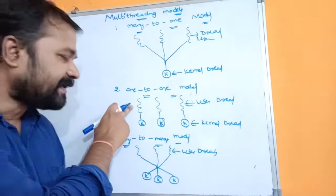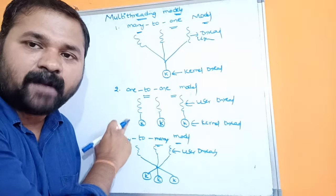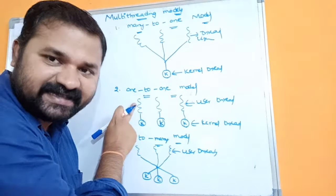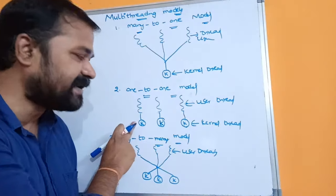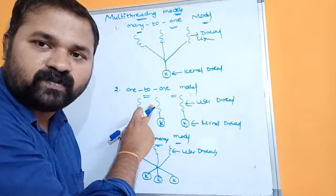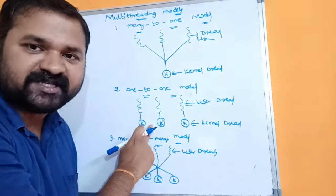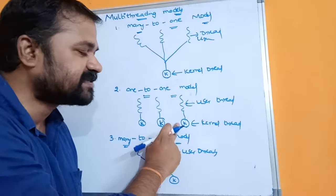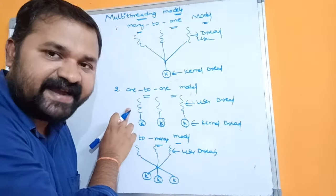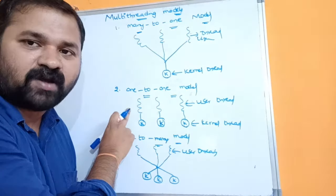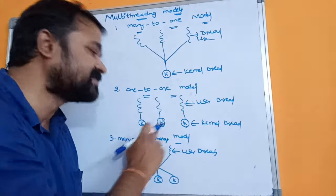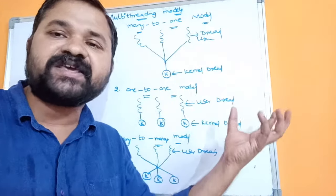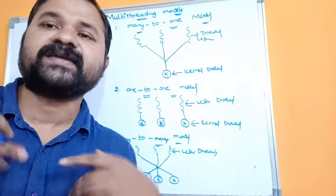In the one-to-one model, each user thread is mapped to a separate kernel thread. Thread one is mapped to kernel thread one, thread two is mapped to its kernel thread, and thread three is mapped to its kernel thread. So if one thread is blocked, there is no problem, because the remaining threads can access their corresponding kernel threads and be executed by the CPU.